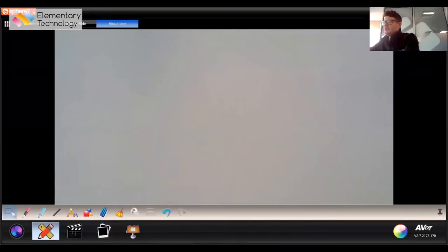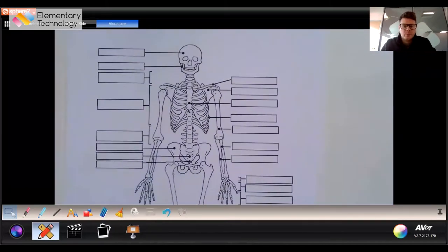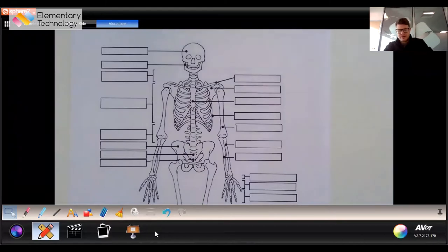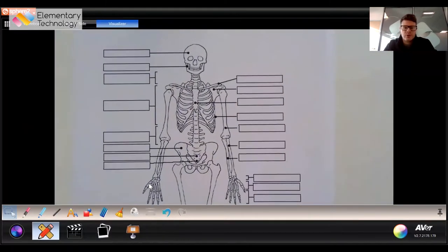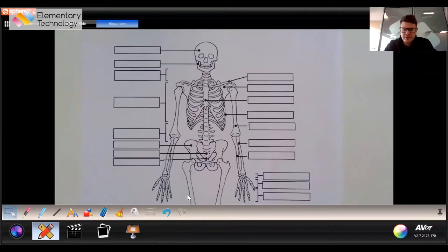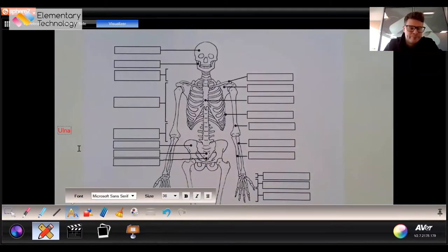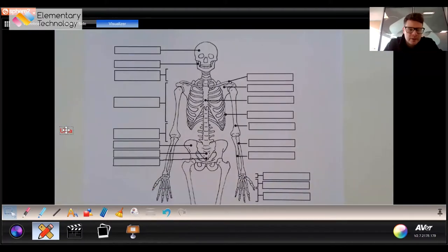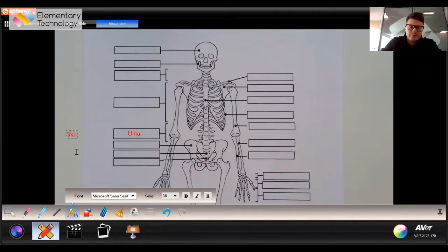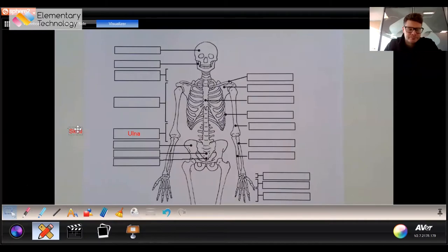Next one, some anatomy. You can see we have our skeleton friend here with some labels. We can ask our class exactly what the labels are. There are two ways we can do this. You can do it live and give them instant feedback. Let's use our text box. We go ulna, move that into place. And I'll put skull in as well. We can move that into place. Once we've done, we can take a picture and it'll store in our media library.